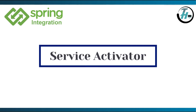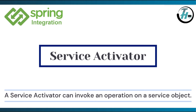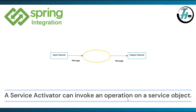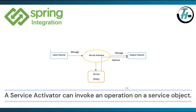Next, service activator. A service activator can invoke an operation on a service object. The message goes from input channel to service activator. The component calls the processing method of the service bean, i.e. POJO. Also, if a message is passed, it will perform some operation on the message. If no message is passed, it acts as an event-style component which gets triggered on arrival of a message. If the service method returns a message, then it is further sent to the output channel.